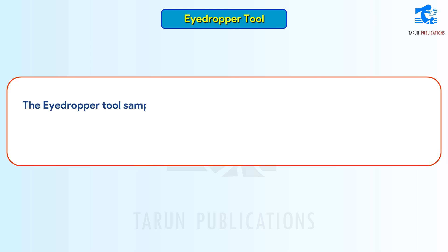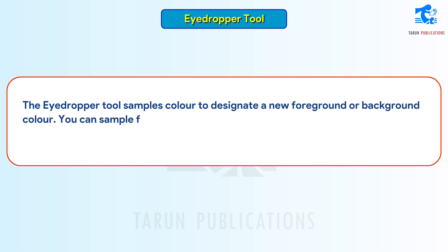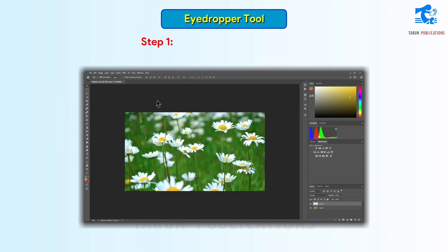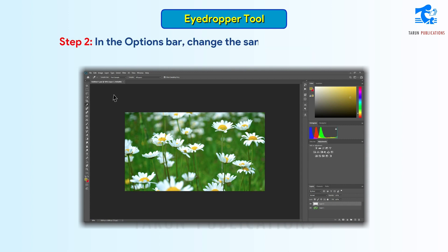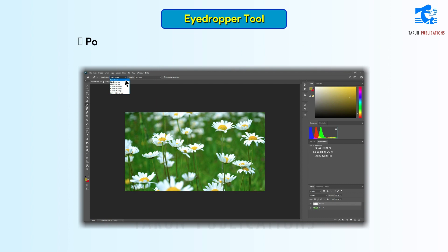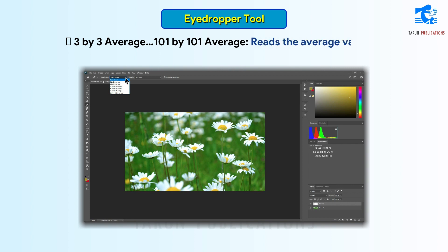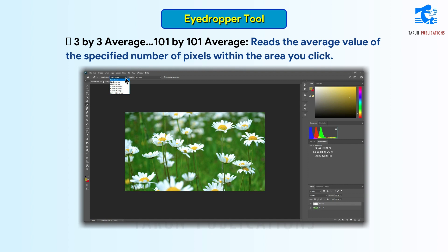The Eyedropper Tool samples color to designate a new foreground or background color. You can sample from the active image or from anywhere else on the screen. Follow these steps to use the Eyedropper Tool. Step 1: Select the Eyedropper Tool. Step 2: In the Options bar, change the sample size of the eyedropper by choosing an option from the sample size menu. Point sample reads the precise value of the pixel you click. 3 by 3 average or 101 by 101 average reads the average value of the specified number of pixels within the area you click.